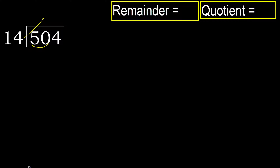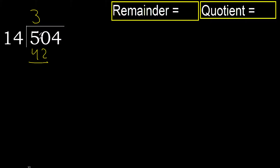14 multiplied by which number is nearest to 50, but not greater? 14 multiplied by 4 is greater. Multiplied by 3 is 42, which is not greater. Subtract.